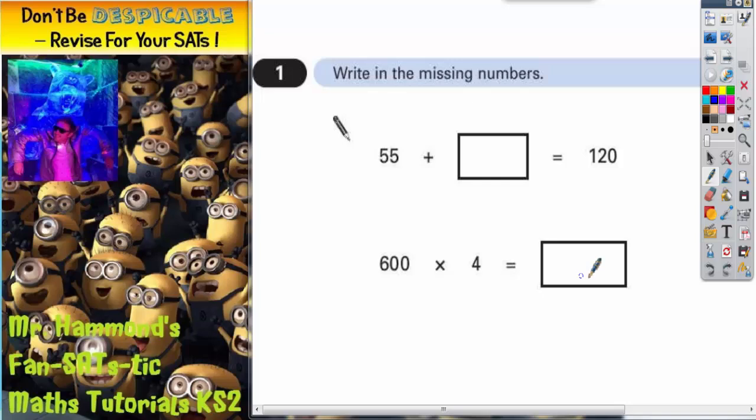First thing to point out is that in the first question it's part of the question that's missing because we already know the answer is 120. And the second question is the actual answer that's missing. And it's always easier to find the answers that are missing rather than part of the question.